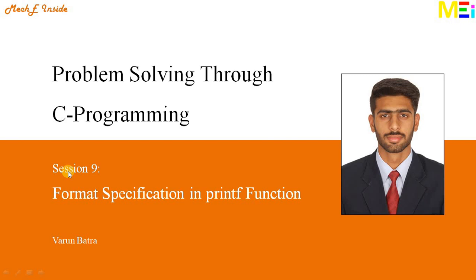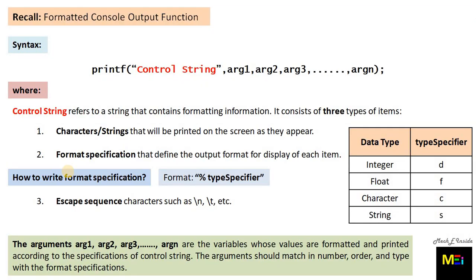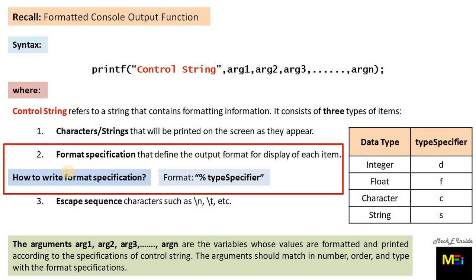Along with this discussion, the concept of variable initialization is also explained. Initially, let's recall the syntax of the formatted console output function, that is printf. The elaborative discussion on syntax with examples was discussed in our previous session. Now we would like to focus on the format specification part of the control string, which helps in defining the output format essential for visualizing data stored in a variable in a desired way.